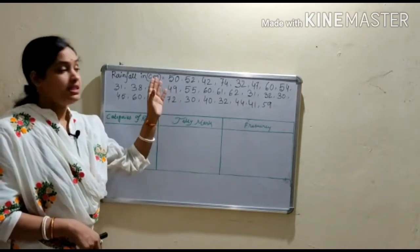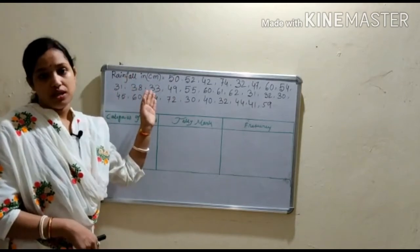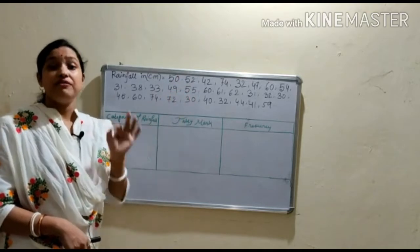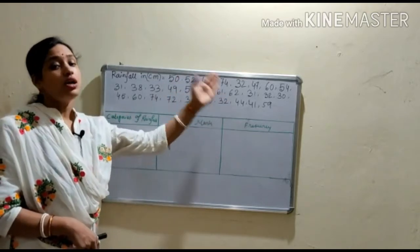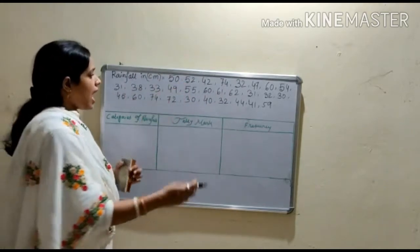These data are based on rainfall in centimeter. So first of all, one has to find out the range of this data by finding the difference between the highest and lowest value in the data.